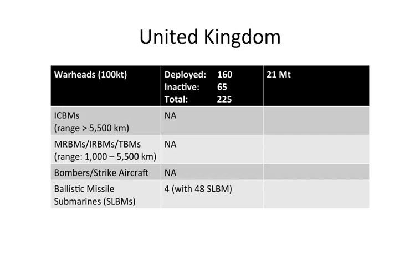Here's the United Kingdom — it's a bit of a contrast. The United Kingdom is an example of a nuclear-armed state that has placed all of its nuclear capability onto ballistic missile submarines. They have four Vanguard-class submarines with 48 submarine-launched ballistic missiles — the Trident II D5 missiles.